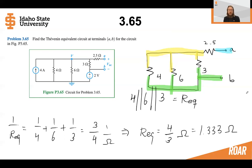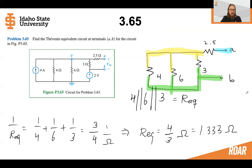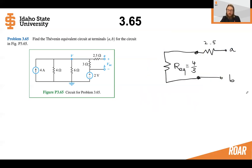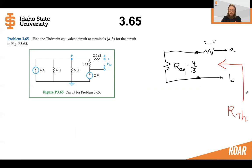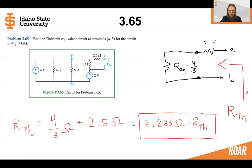Hopefully you're seeing that despite finding a Thevenin equivalent, these methods go all the way back to our chapter 2-3 section on equivalent circuits — the things you learned previously continue to build. We've found an equivalent resistance of 1.33 ohms. We can simplify the circuit even more, and now we just have two resistors in series: a four-thirds resistor and a 2.5 ohm resistor. They add up together, giving us a 3.83 ohm Thevenin resistance.